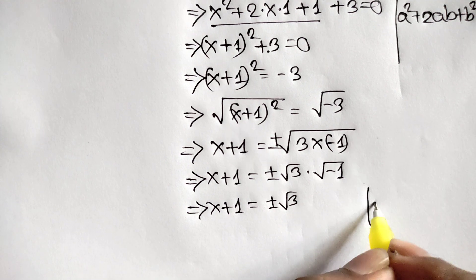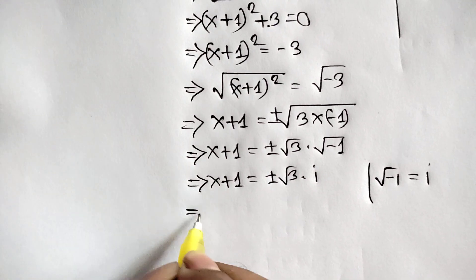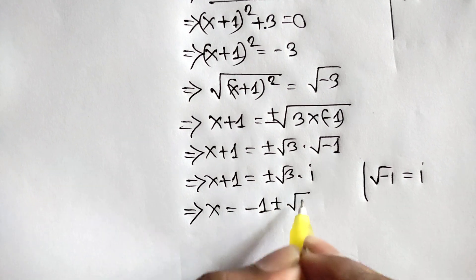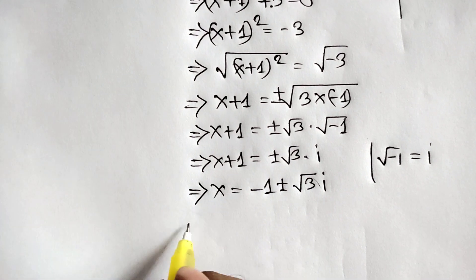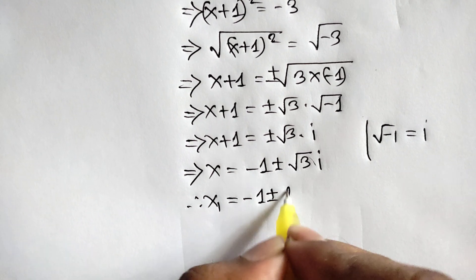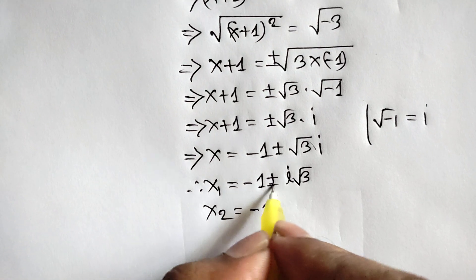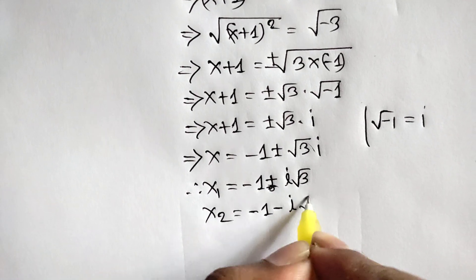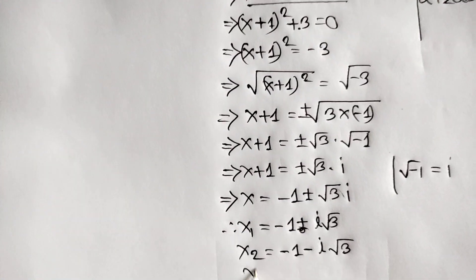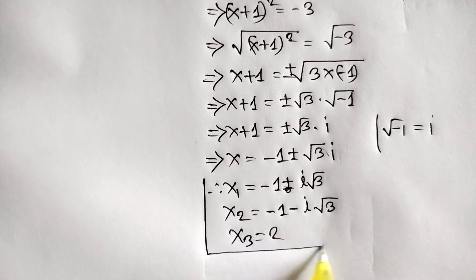So x plus 1 is equal to plus or minus square root of 3 times i, and we know the square root of negative 1 is equal to i. Taking 1 to the right side we can write x is equal to negative 1 plus or minus square root of 3 i. So there are two complex solutions: x1 is equal to negative 1 plus i square root of 3, and x2 is equal to negative 1 minus i square root of 3. And the real solution is x is equal to 2. So finally we have three solutions for x.